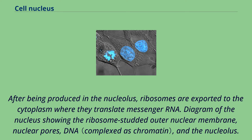After being produced in the nucleolus, ribosomes are exported to the cytoplasm where they translate messenger RNA. A diagram of the nucleus shows the ribosome-studded outer nuclear membrane, nuclear pores, DNA, and the nucleolus.